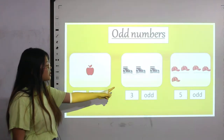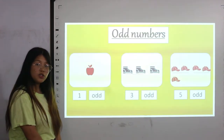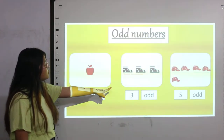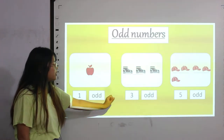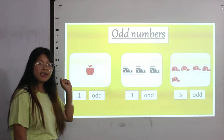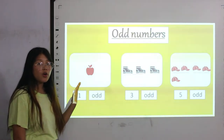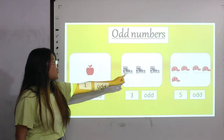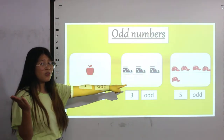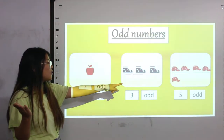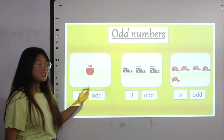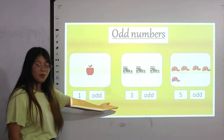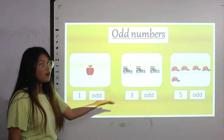Moving on to the next card. Let's count how many shoes are there — one, two and three. So we have three shoes. To check if three is odd or even, we have to pair them up. So these two are in pair, but that one is all alone — it doesn't have any pair. So number three is an odd number.